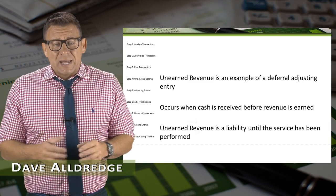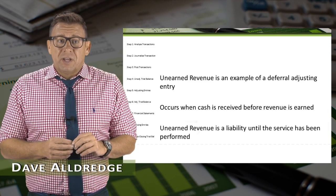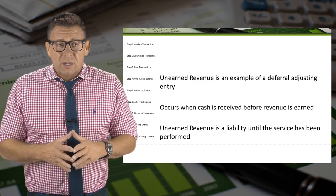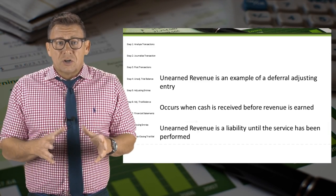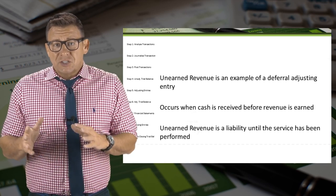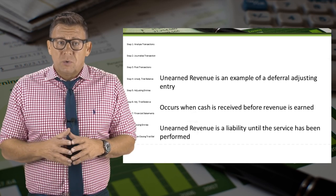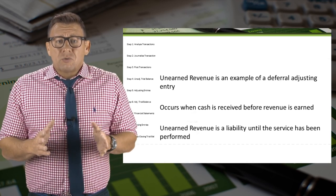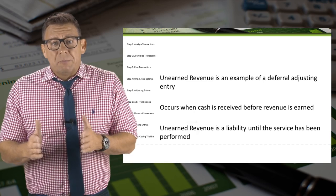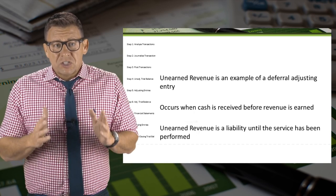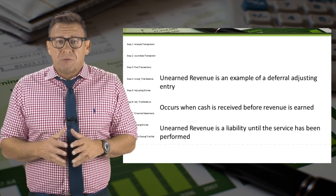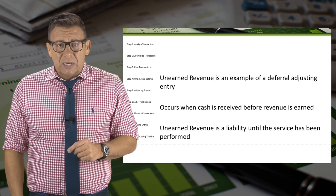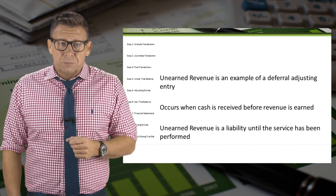Unearned revenue is an example of a deferral adjusting entry. It occurs when cash is received before revenue is earned. Unearned revenue is a liability until the service has been performed. Make sure you note that — it's a liability, not a revenue.